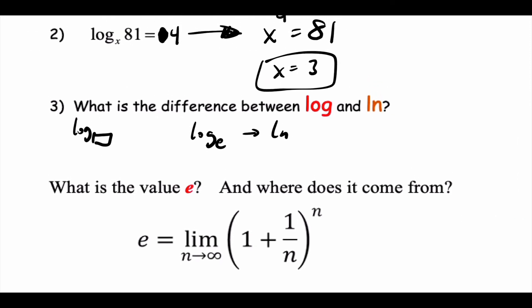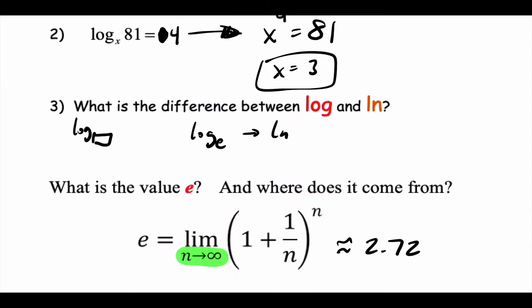What is E? E is a number around 2.72. It comes mainly from finance. If you were to find the limit of a certain equation as N approaches infinity, you would always come close to this number — it would not get any higher than that number. That's what E is.